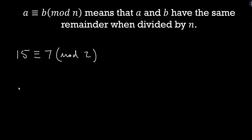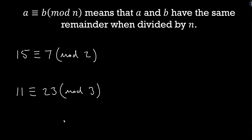Let's change it up to mod 3. We have something like 11 is congruent to 23 mod 3. When we divide 11 by 3 we get a remainder of 2, and we divide 23 by 3 we get a remainder of 2 — same remainder when divided by 3, so they are congruent mod 3.